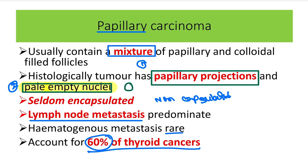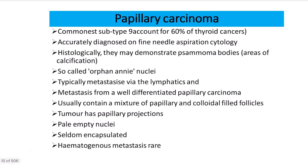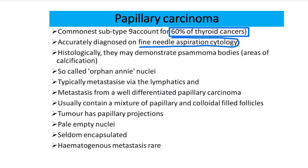Papillary carcinoma accounts for 60% of total thyroid cancer. The second most common is follicular carcinoma at 20% — meaning papillary carcinoma is three times more frequent than follicular carcinoma. Together they account for 80% of thyroid carcinomas. Papillary carcinoma can be accurately diagnosed with FNAC, but FNAC is not sufficient for follicular carcinoma, which requires biopsy.